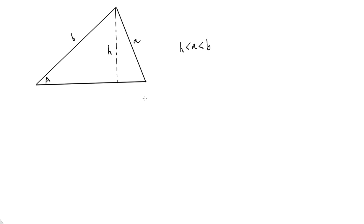As I mentioned in the last video, this occurs when side A — the side that is opposite the angle you're given — is bigger than the height of your triangle, but is smaller than the other side you're given in the problem. This side A, the opposite side, is bigger than H, because if it were smaller than H you wouldn't have a triangle, but smaller than B. Under this circumstance, you get two triangles, and that means you have to do two separate sets of calculations.